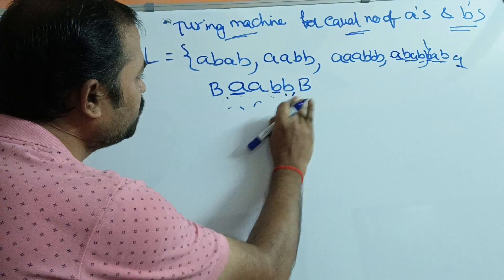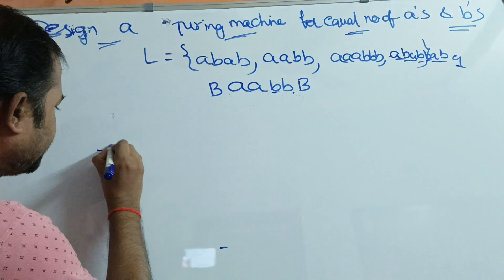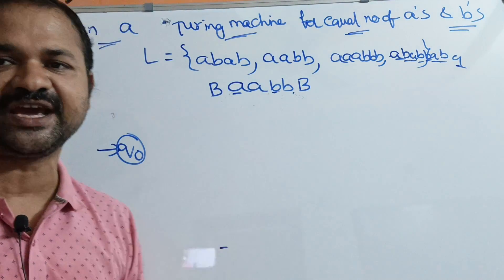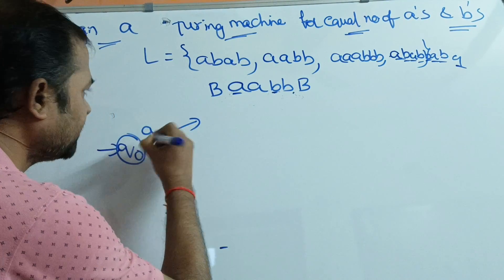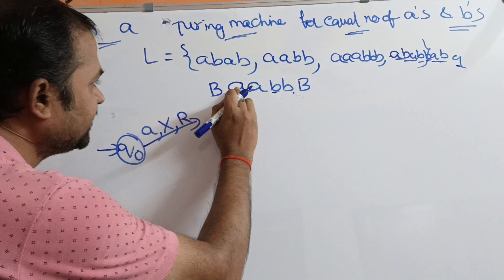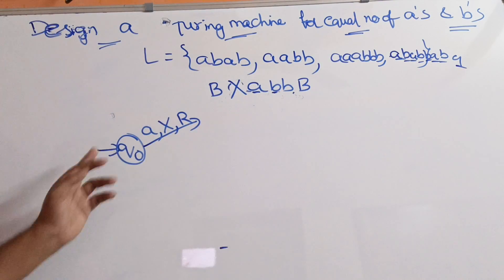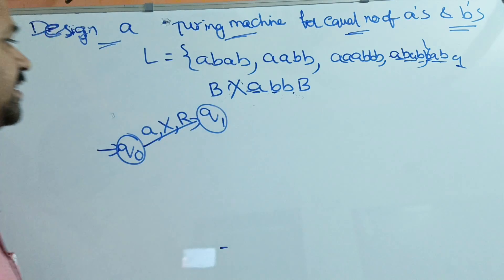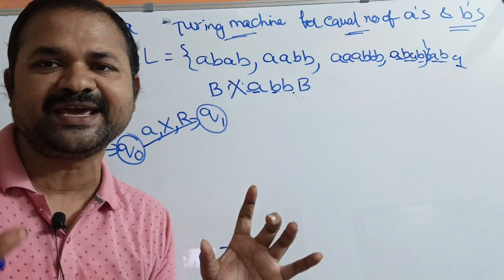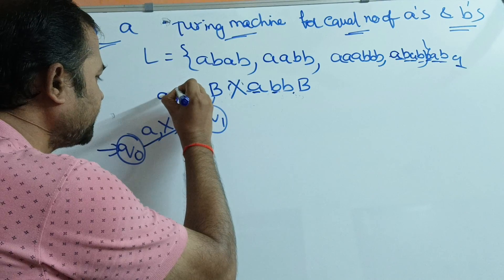Now we have to design a Turing machine for solving this problem. Let us assume that the initial state is Q0. The input symbol is A initially. So, if we apply A on Q0, then replace A by X and move towards the right. Let the next state be Q1. On Q1, if we apply A, then there is no need to change A — self loop: A, A, right.